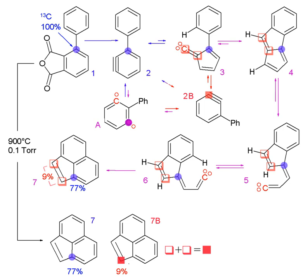In this technique, one or more of the atoms of the molecule of interest is substituted for an atom of the same chemical element, but of a different isotope — like a radioactive isotope used in radioactive tracing. Because the labeled atom has the same number of protons, it will behave in almost exactly the same way as its unlabeled counterpart and, with few exceptions, will not interfere with the reaction under investigation.